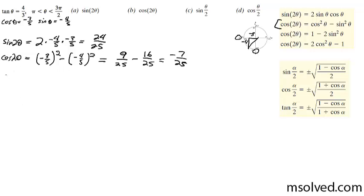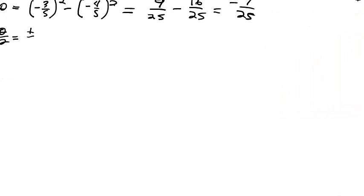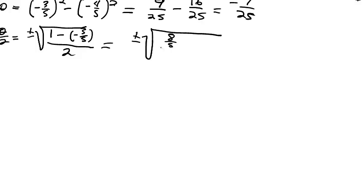The half angle of the sine is going to be equal to, we're going to use our top formula there, which is going to be equal to plus or minus square root of 1 minus the cosine, in this case negative 3 over 5, over 2, which is going to give us plus or minus square root of 8 over 5 over 2, plus or minus square root of 4 over 5. I'm skipping some steps here, but it's going to end up being plus or minus 2√5 over 5.